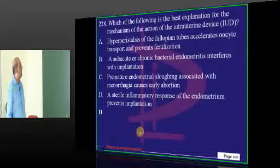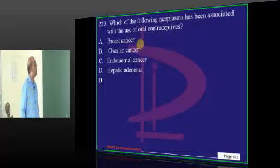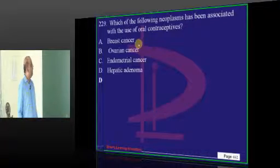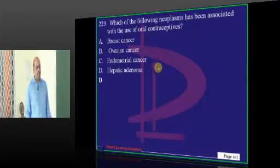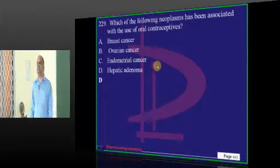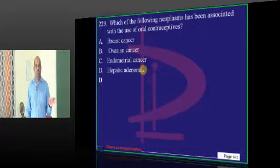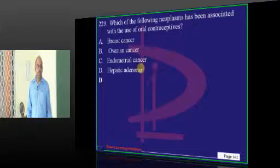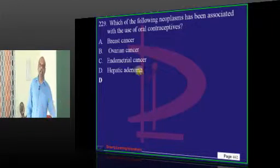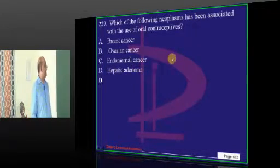Coming to OCPs — which neoplasm is known to be associated? They can lead to hepatic adenoma. They also protect against ovarian cancer because of the decreased number of ovulatory cycles, which is the main mechanism.